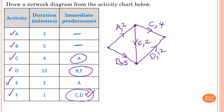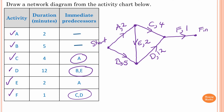The last activity is F. We know C and D are immediate predecessors of F, so we start from that vertex. This is activity F with a weighting of one. You can write 'start' here and 'finish' here.